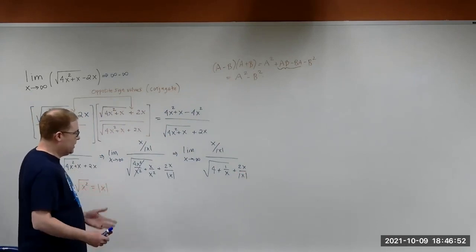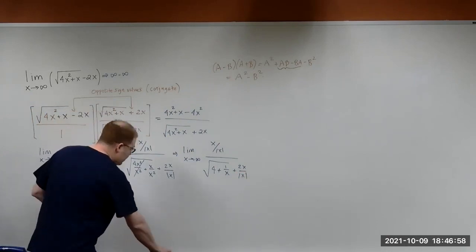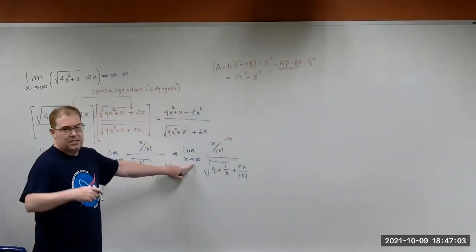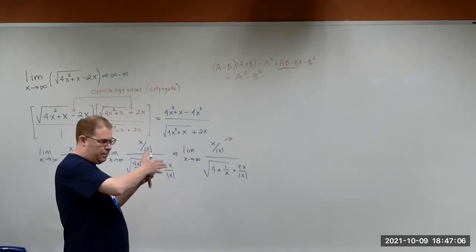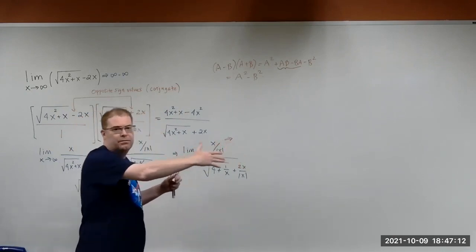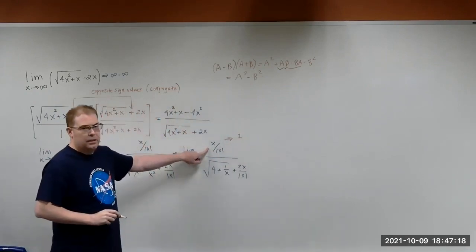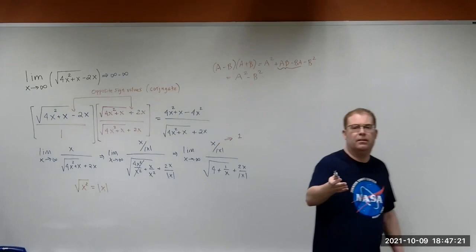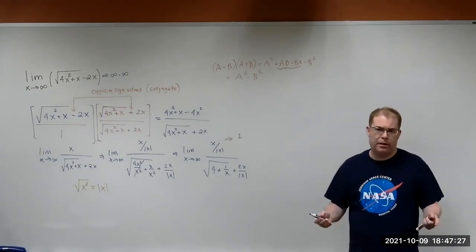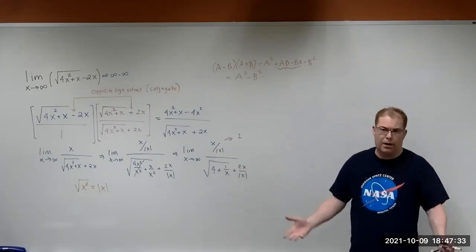Now we can take the limit as x approaches infinity. Because x is approaching infinity — it eventually gets past 0 and is always positive — this part, x over the absolute value of x, is always going to be 1. For example, let x be 10: you get 10 divided by the absolute value of 10, which is 10 over 10, which is 1. The same thing if x is 100: 100 over the absolute value of 100 is still 1.